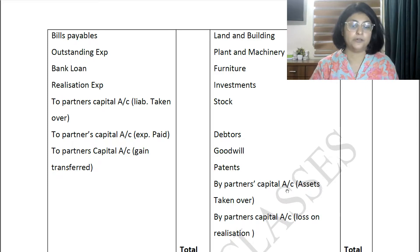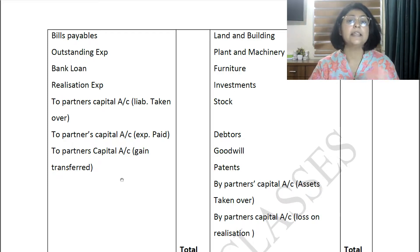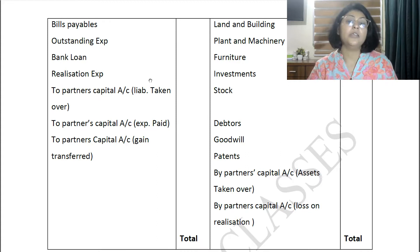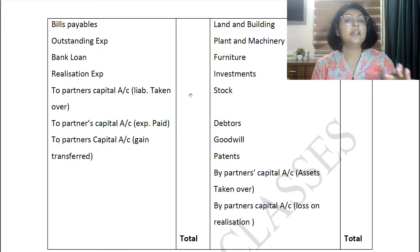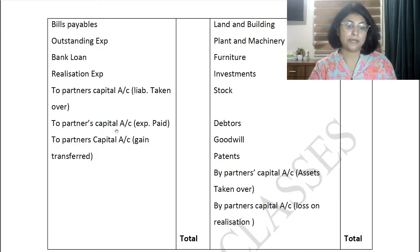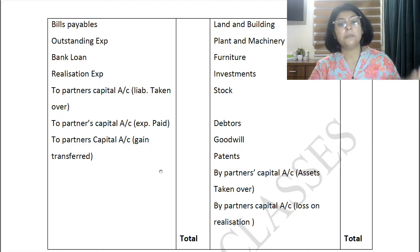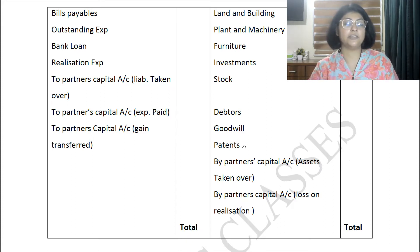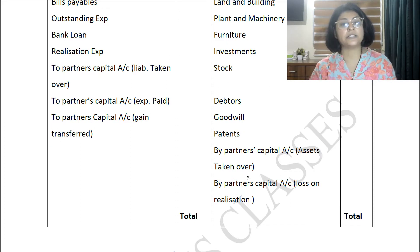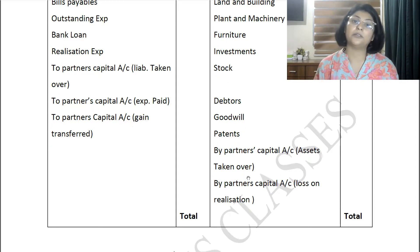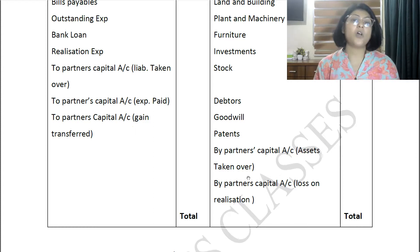The Realization Account is a nominal account. If the credit side is greater — incomes exceed expenses — there is a gain, which is transferred to all partners' capital accounts in their profit-sharing ratio. If the debit side is greater, there is a loss on realization, which is also transferred to partners' capital accounts but on the debit side of their capital accounts in their profit-sharing ratio.